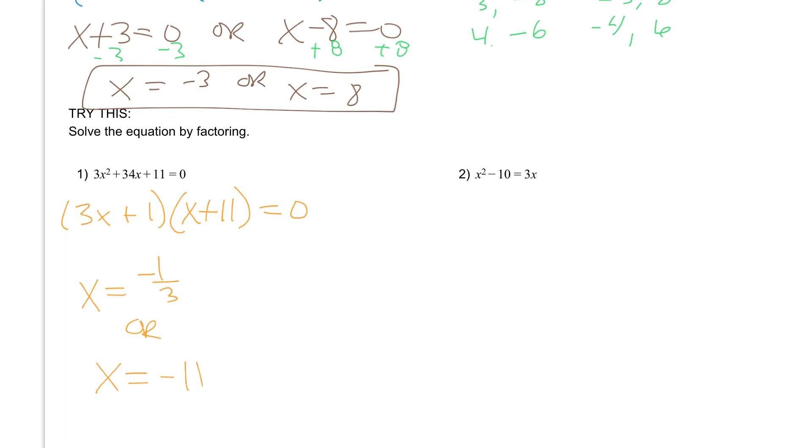If you did number 2 correctly, you should have factored it into (x + 2)(x - 5) = 0. If you solved it, you would have gotten x equal to -2 or x equal to 5.